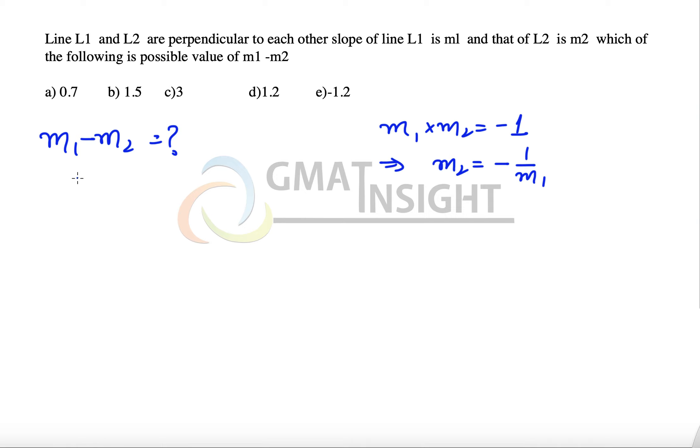I'm going to substitute this here, and this expression becomes m1 minus minus 1 over m1, which means this expression becomes m1 plus 1 over m1, and we have to find out what value this can assume.